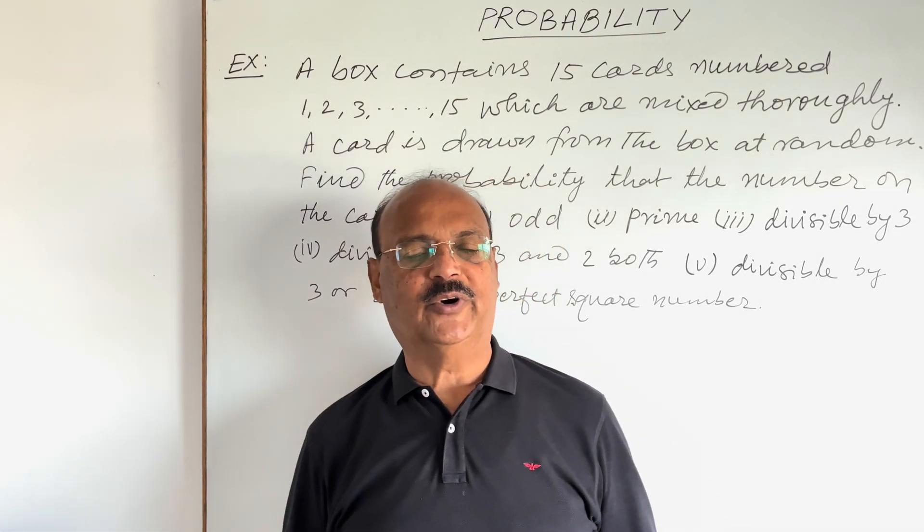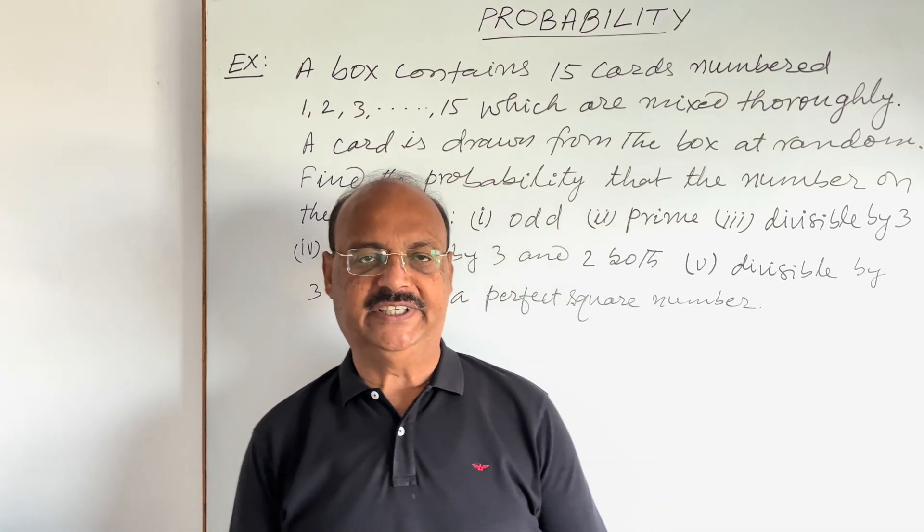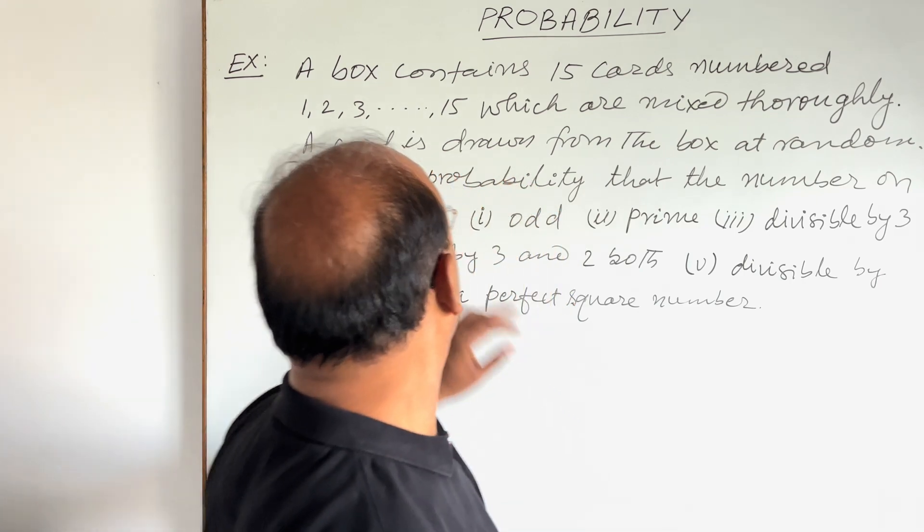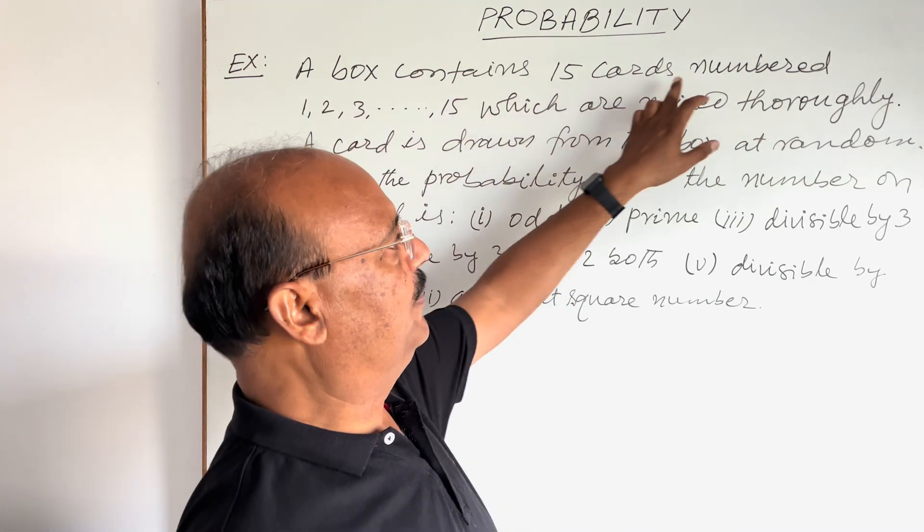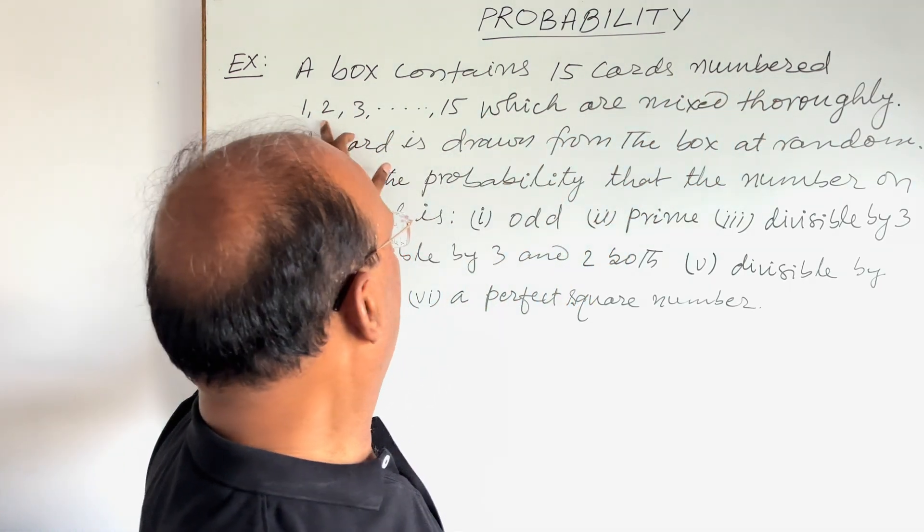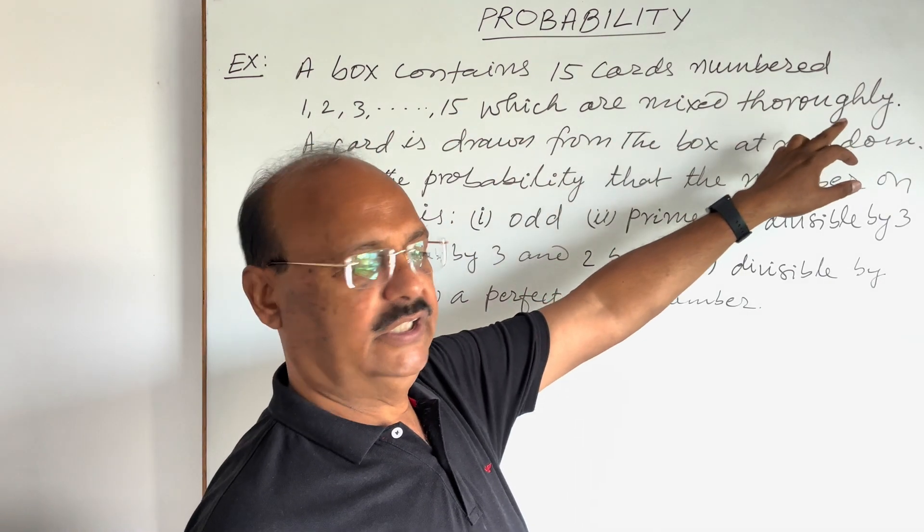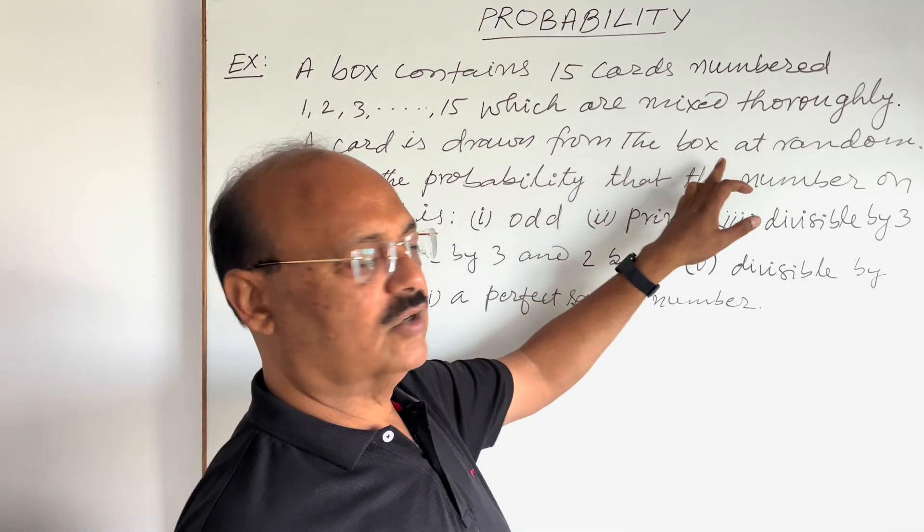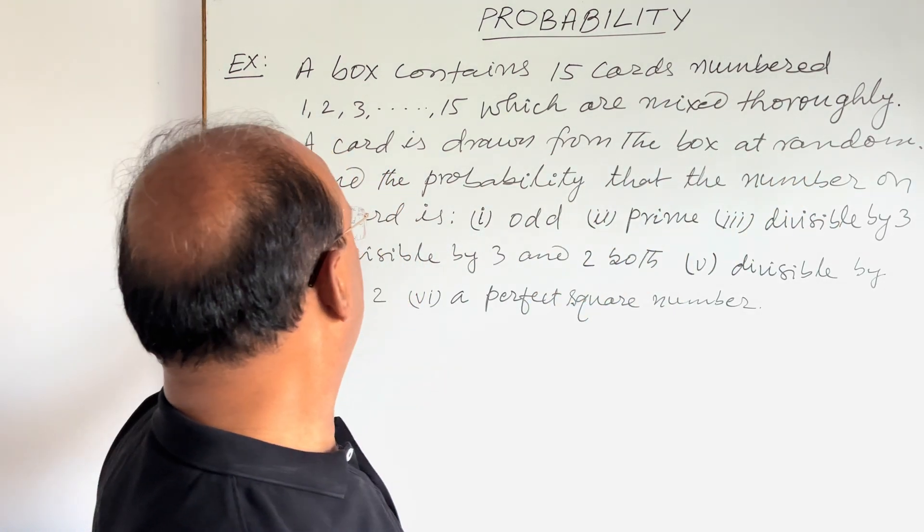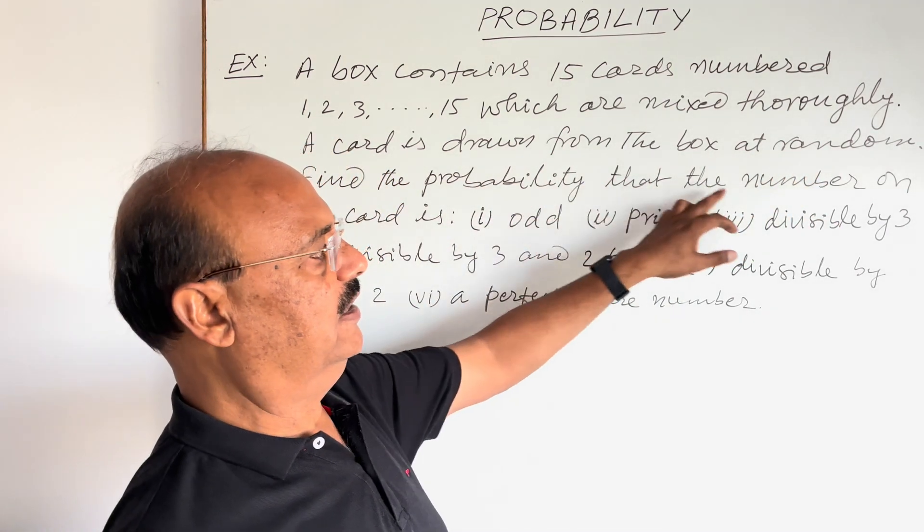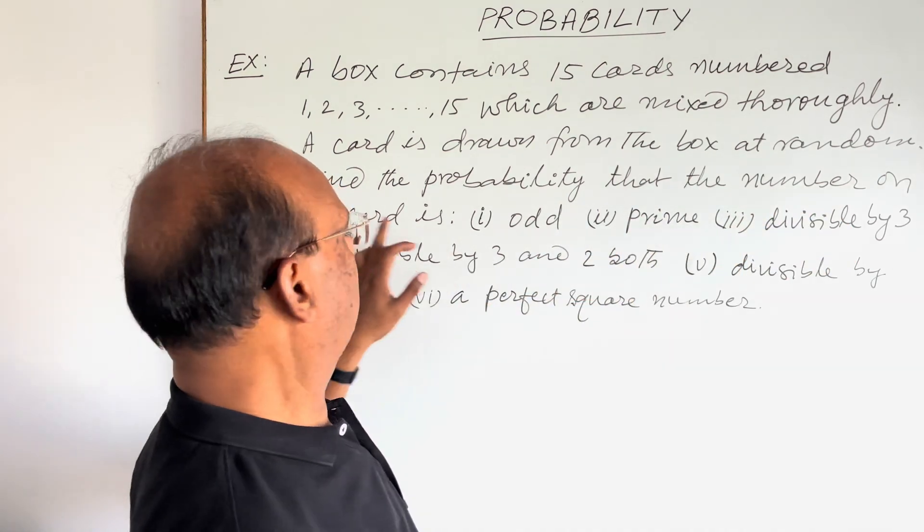Welcome students, let us see a very important question from the topic probability. The question is, a box contains 15 cards numbered 1, 2, 3, up to 15, which are mixed thoroughly. A card is drawn from the box at random.